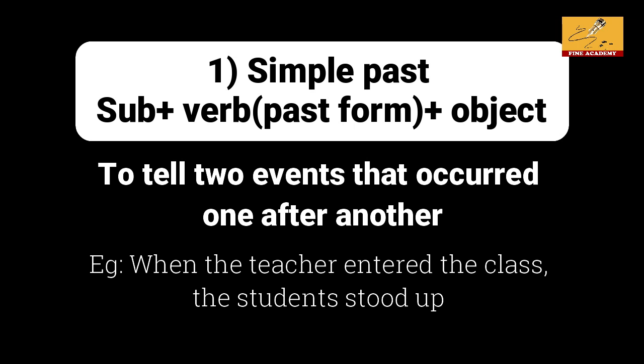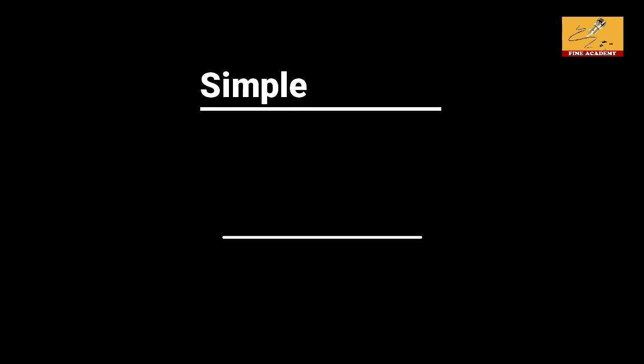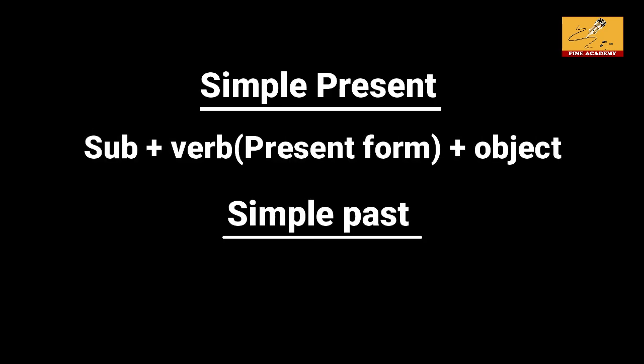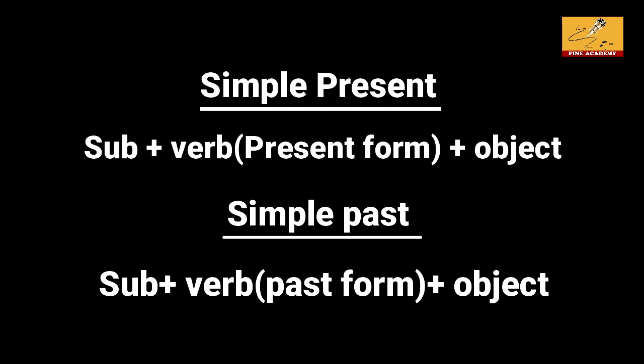The structure for simple past is: subject plus past form of verb plus object. Simple present uses: subject plus present form of verb plus object.